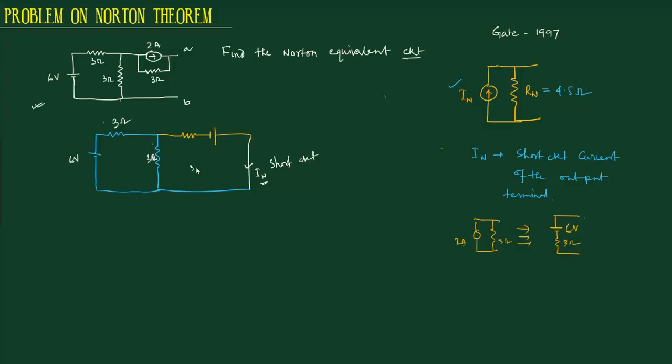Now I'll apply loop equations. Current I1 and current I2, where In equals I2. From loop 1: 6 equals 3 plus 3 times I1 minus 3 times I2, or 2 equals 2I1 minus I2. This is equation 1. From loop 2: 6 equals 3 plus 3I2 minus 3I1, or 2 equals 2I2 minus I1. This is equation 2.